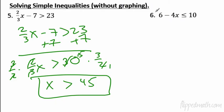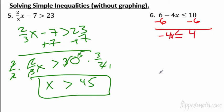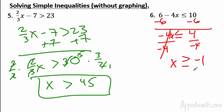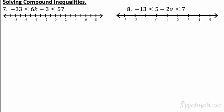You do number 6 — pause the video. Subtract 6 from each side: negative 4x is less than or equal to 4. Now divide by a negative — negative 4 — which switches the sign the other way. The answer is x is greater than or equal to negative 1. Remember: you switch the sign when you divide or multiply by a negative.